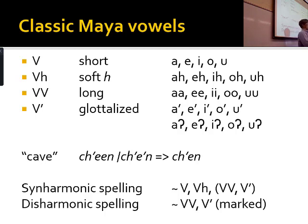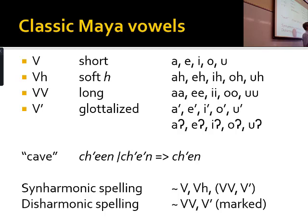A reminder about Maya vowels — we talked about spelling rules. They're short, long, and glottalized. It's very important, and there's a lot of confusion about the nature of glottalized vowels, so you can see people spelling with just short or long vowels. I often do that — not because it's phonetically accurate, but because I'm not always sure. All I know is that the glyphs distinguish between short vowels and other kinds, so I just indicate that.